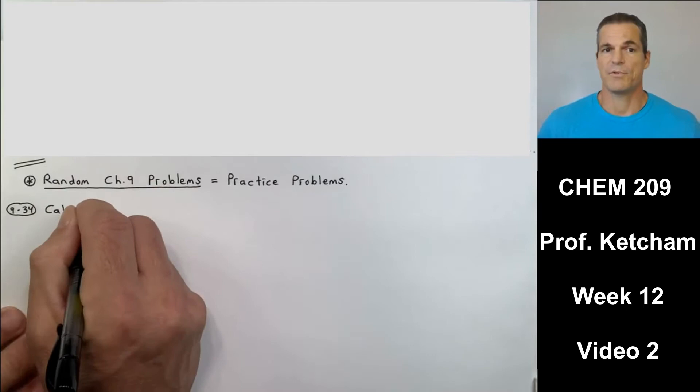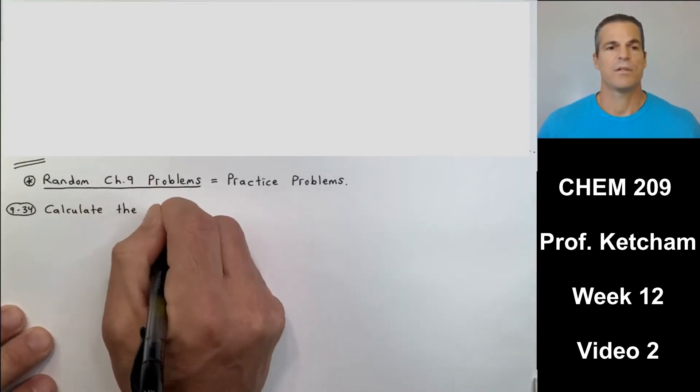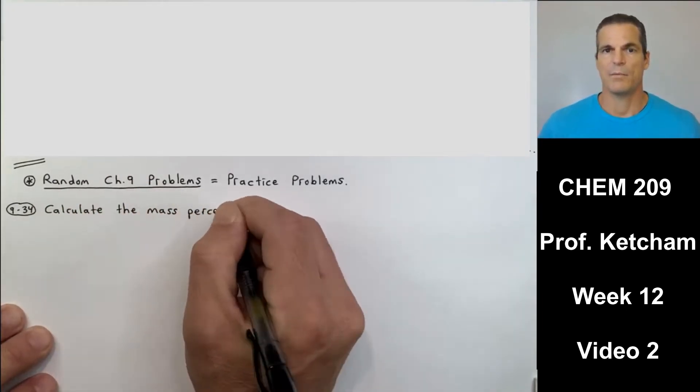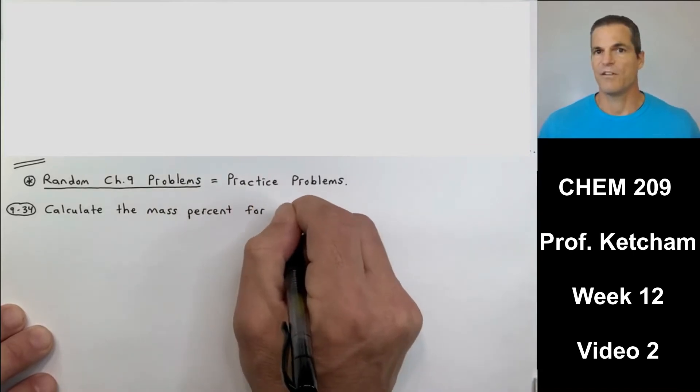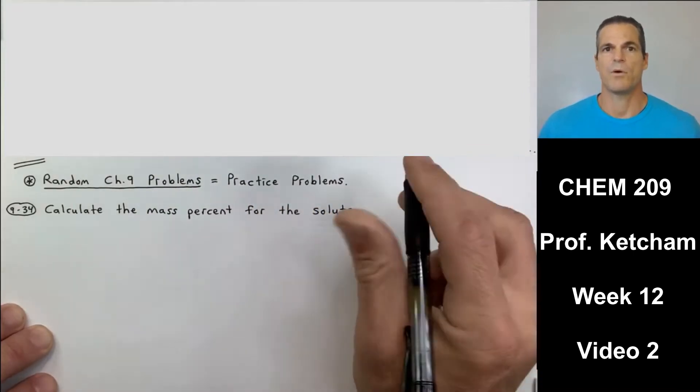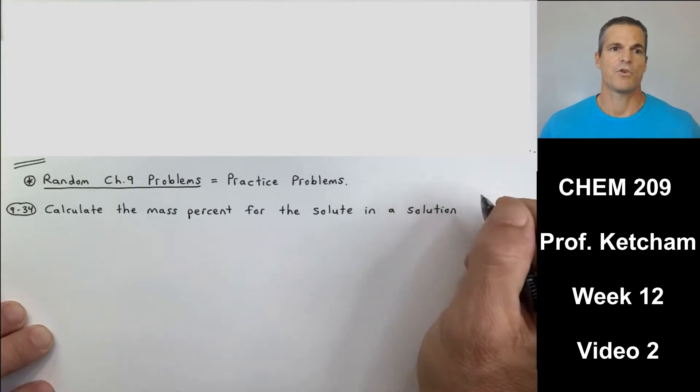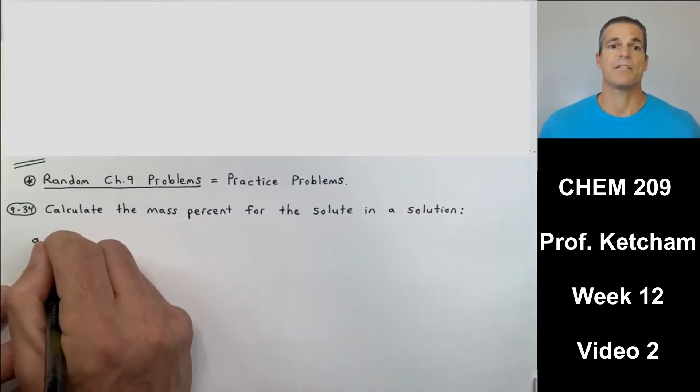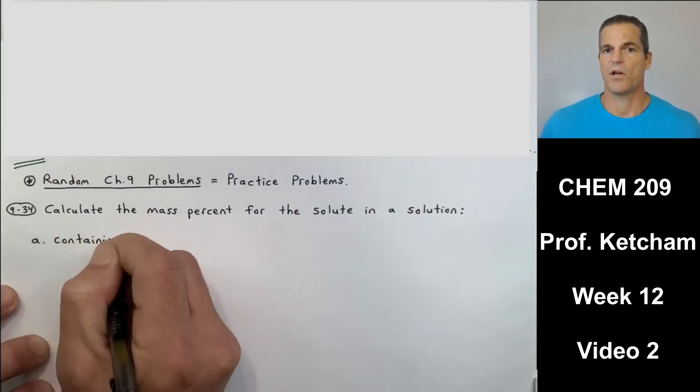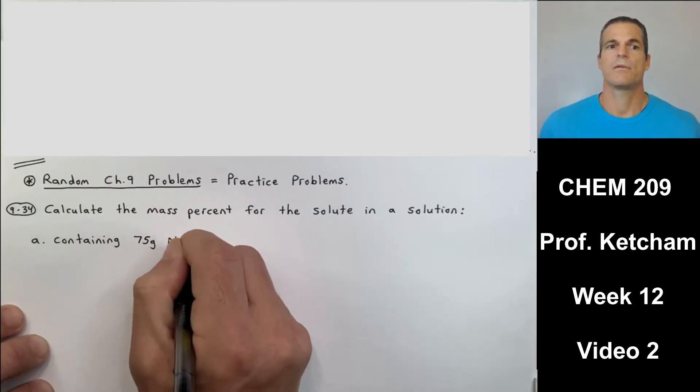Now here's just some random chapter nine problems. They're all very helpful. Some of them are not assigned problems, and that's not because they're different. I just want you to have more exposure to more problems from the chapter. So this is number 34.